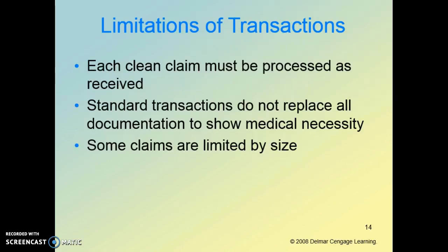There is some sort of limitation — the electronic process has to be processed as it's received. It can't change it; it has to process it the way it was presented. So that's why sometimes things will get rejected and have to go back again. Also, keep in mind that if there is some sort of documentation required to show that something was medically necessary, that still has to happen — you don't replace that documentation when doing this. And sometimes claims are limited by their size, so you might have to break up a claim into multiple pieces in order for it to be processed properly.